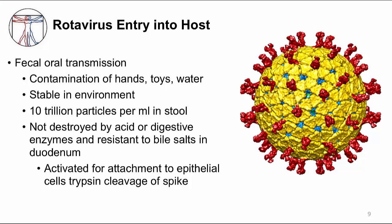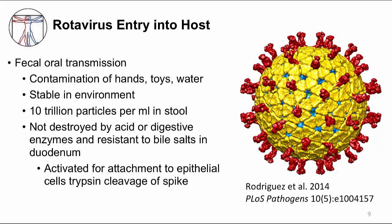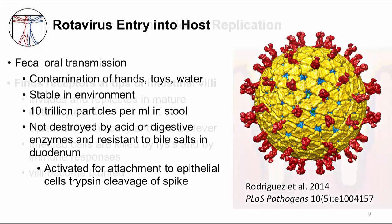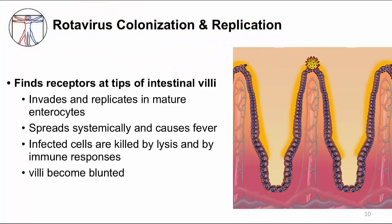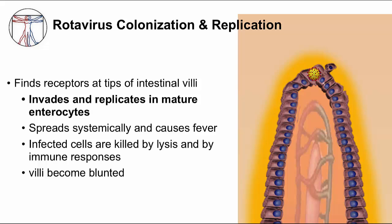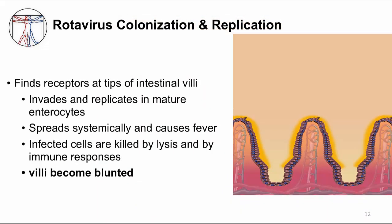After ingestion, rotavirus is not destroyed by stomach acid, digestive enzymes, or the detergent properties of our bile salts. It's not destroyed by our digestive enzymes, but it is activated by one of them called trypsin, which changes the conformation of its spikes. As the virus reaches the small intestine, it binds to a specific receptor and becomes internalized in the enterocytes. It invades the mature enterocytes at the tips of the villi, and after it replicates, it can also spread systemically, which may contribute to the fever. As the immune system recognizes the infection and the virus replicates, the enterocytes die and the villi become shorter in the first few days of infection.